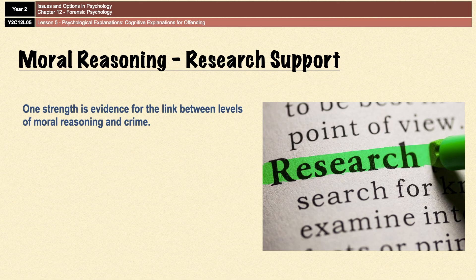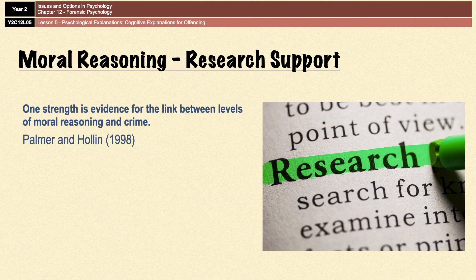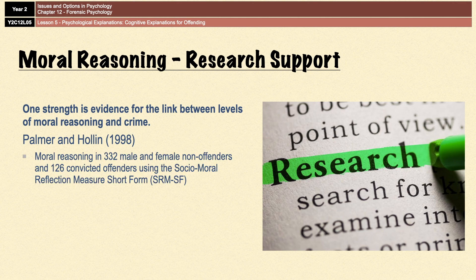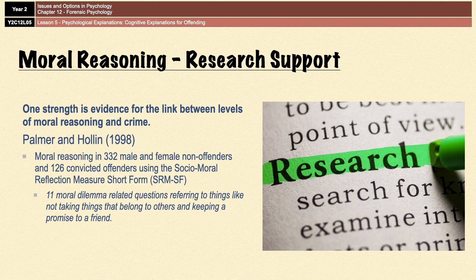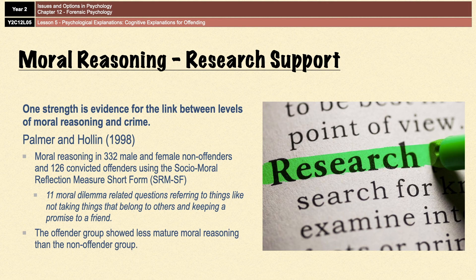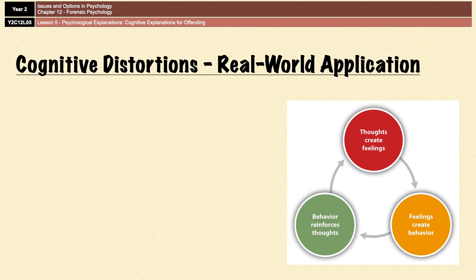That research support comes from Palmer and Holland in 1998. They assessed moral reasoning in 332 male and female non-offenders and 126 convicted offenders using a socio-moral reflection measure. They gave them 11 moral dilemma-related questions, such as questions relating to not taking things that belong to others and keeping a promise to a friend. They found that the offender group showed less mature moral reasoning than the non-offender group, which supports Kohlberg's ideas that lower moral reasoning is associated with offending behavior.